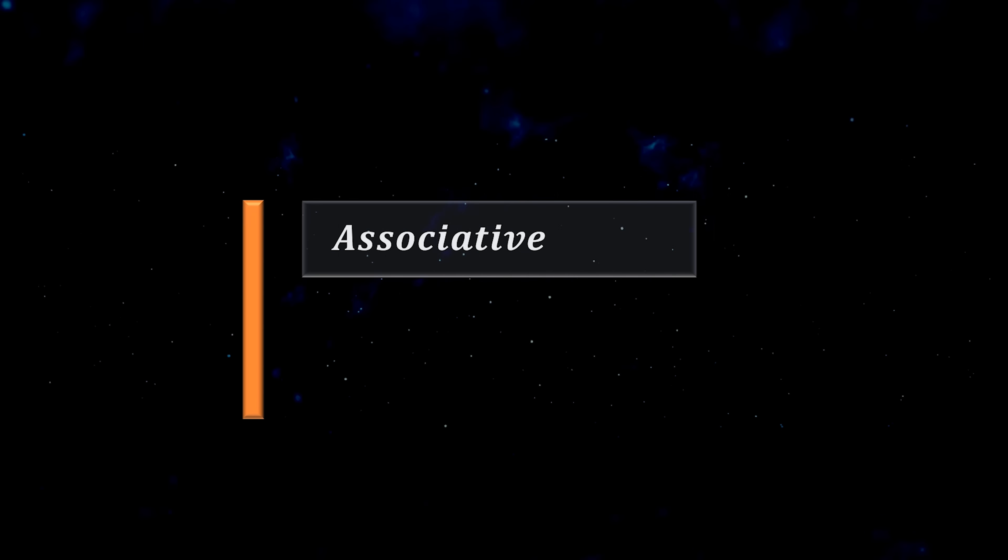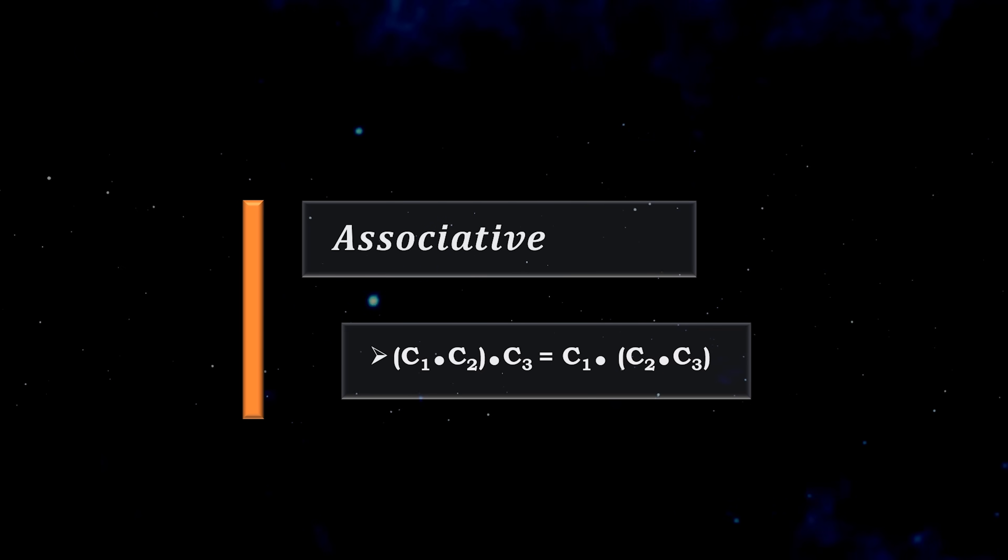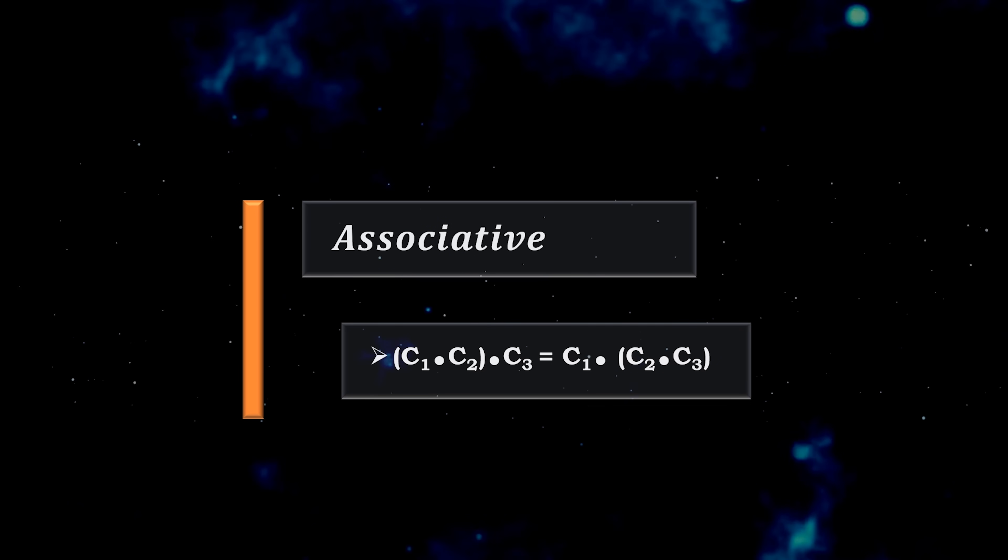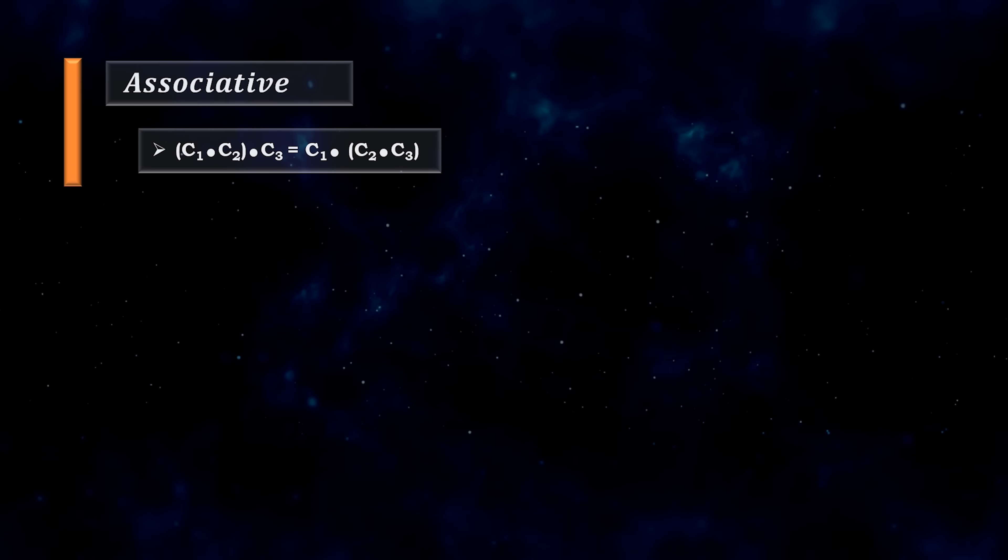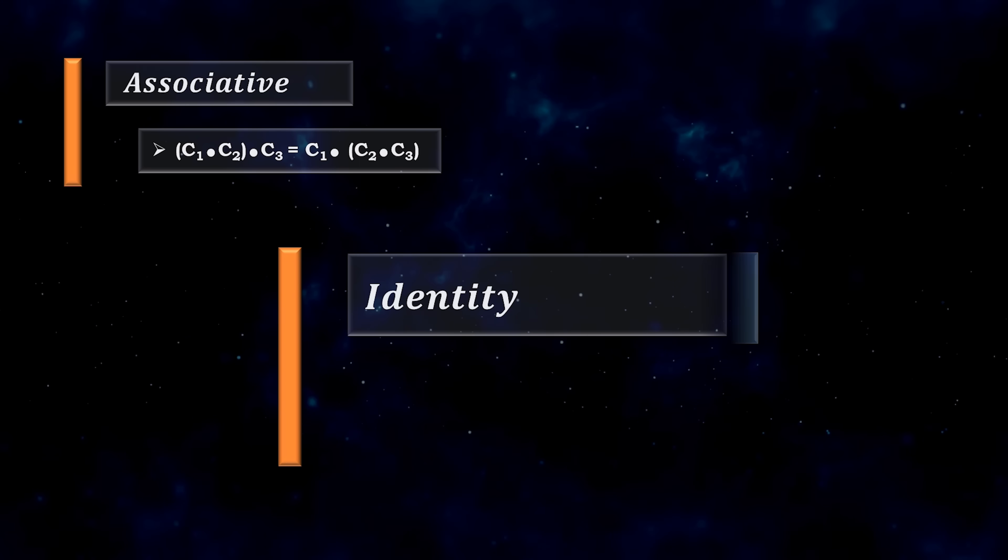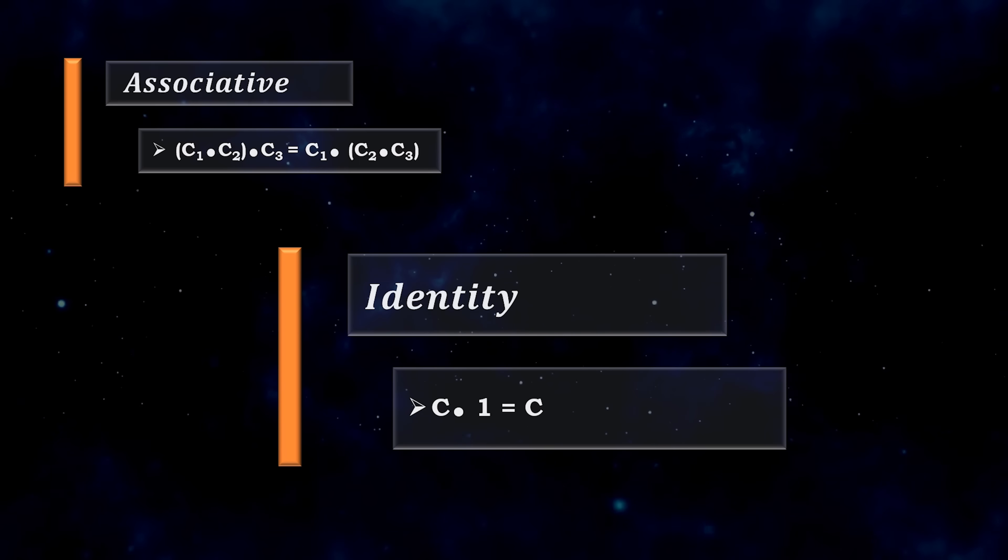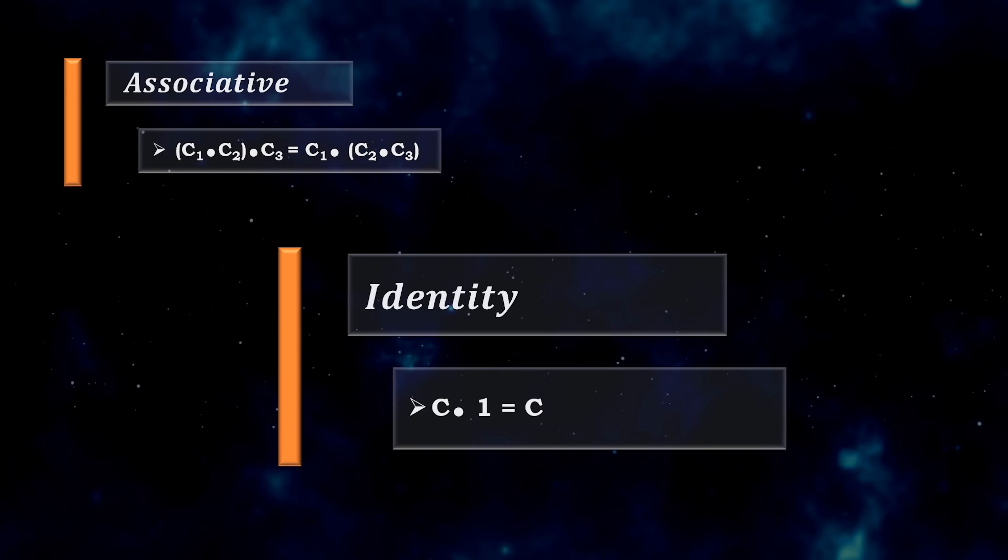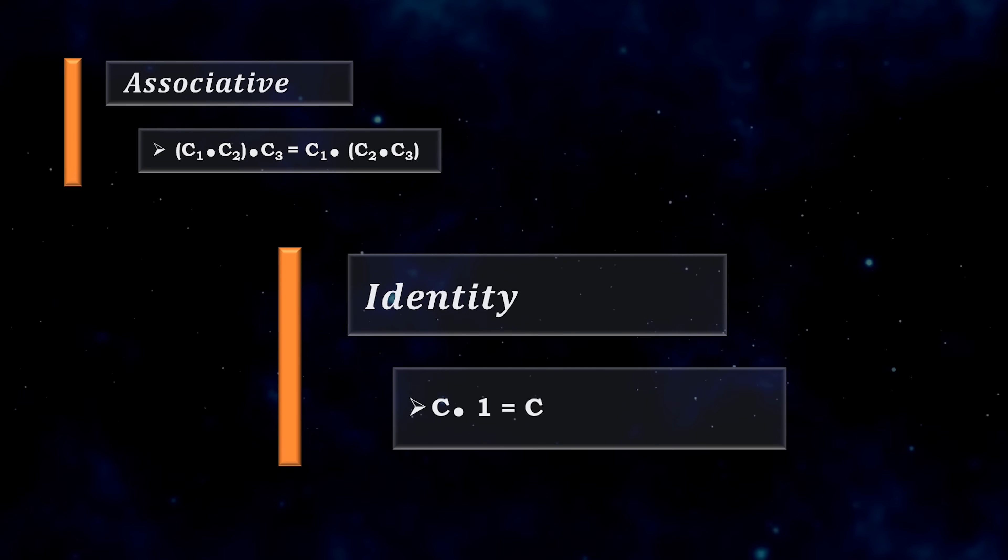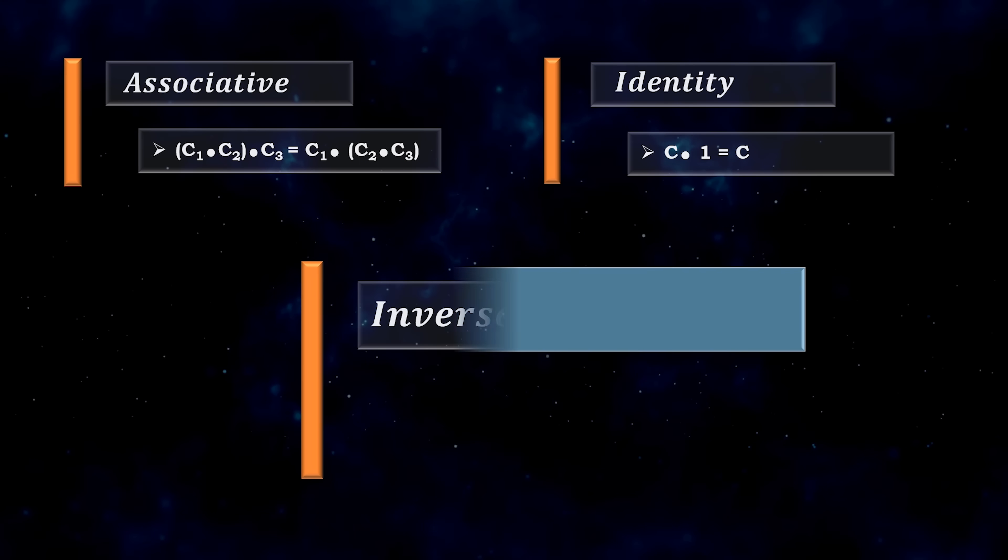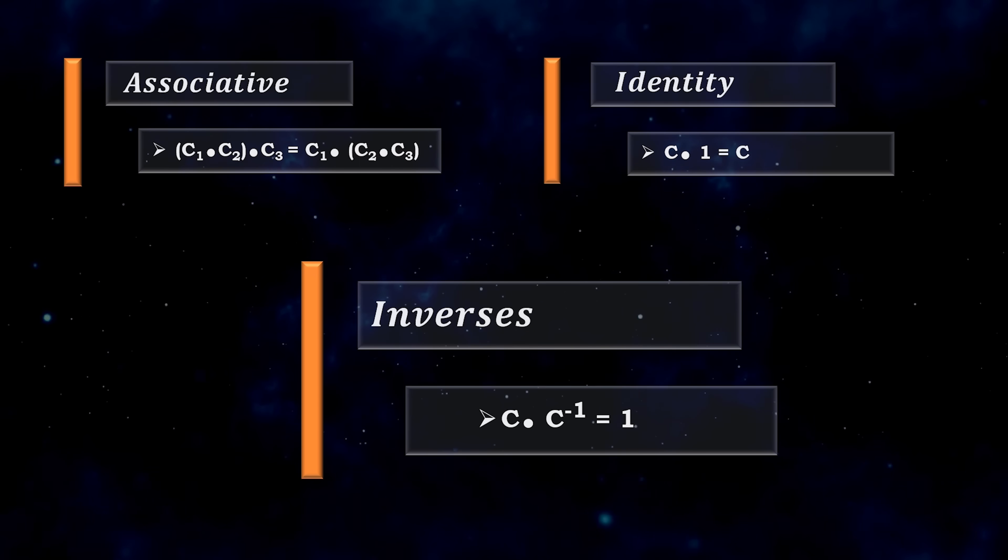It's associative. For any loops c1, c2, and c3, it satisfies this rule. There's an identity element, which we'll call 1. This is the constant loop. If you take any loop c and multiply it with 1, you get back c. Finally, every loop c has an inverse, denoted c inverse.